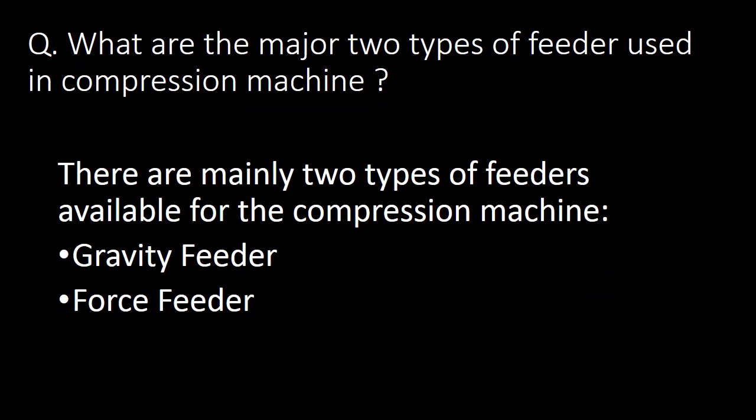Next question: what are the two major types of feeders used in a compression machine? There are mainly two types of feeders: first, gravity feeder, and second, force feeder.